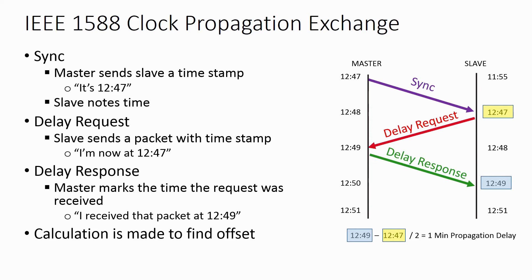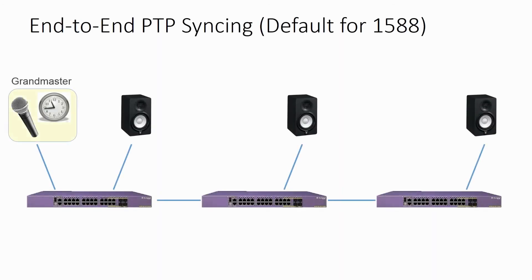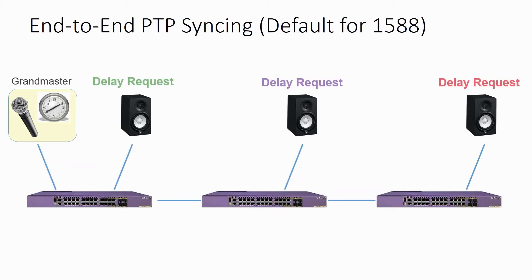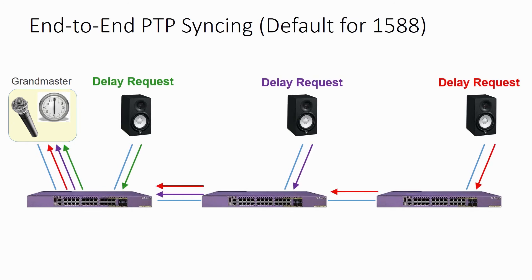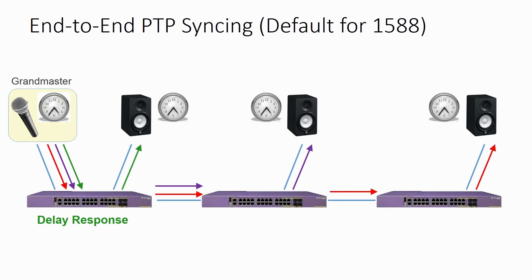AVB takes this process further. A simple 1588 device makes this exchange from endpoint to endpoint, known as an end-to-end exchange. A big problem with this type of exchange is it doesn't consider the network in between. Even in a network of one switch, transfer timing is not an absolute value. Excessive network traffic alone can slow down a packet exchange, and networks with multiple switches can introduce even more delay.